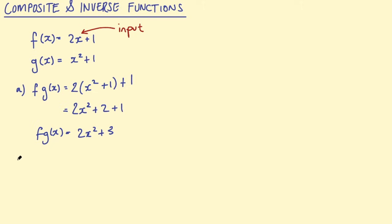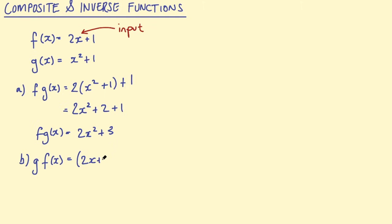We could also do this the other way around and find g of f. You'll notice something interesting about these two functions in a moment. To find g of f, we need to take the function f and input it into g. So where the x is in g, think of it like an empty space — we take 2x plus 1 and put it in there, so we need to square (2x plus 1) and add 1.